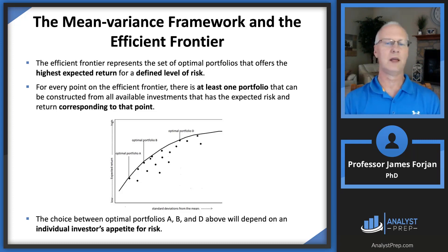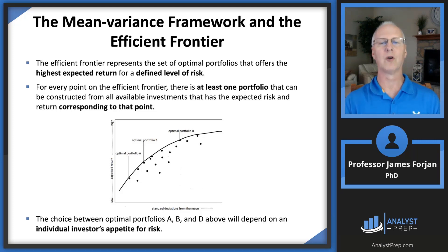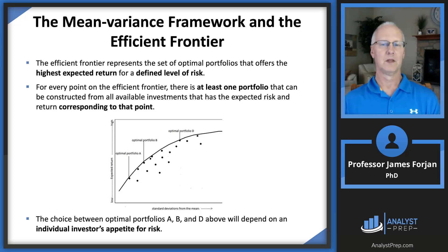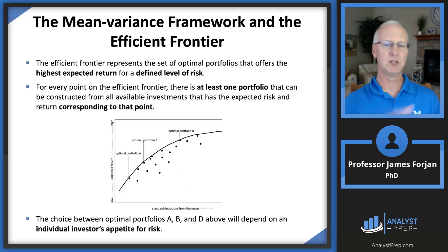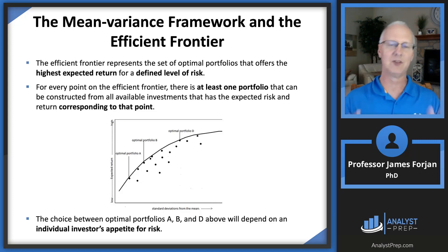This efficient frontier is the locus of efficient points based on all financial assets that fall on or below the line. For every point on the efficient frontier, there is at least one portfolio constructed from all available investments with the expected return and risk corresponding to that point. The area up to the northwest corner is called the unattainable region — you just can't get up there. It's financial analysts, executives, and investors who are trying to gather information to find stocks, bonds, and alternative investments that move the efficient frontier up and to the left.